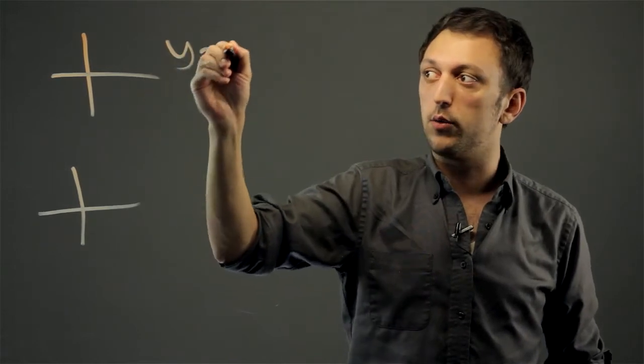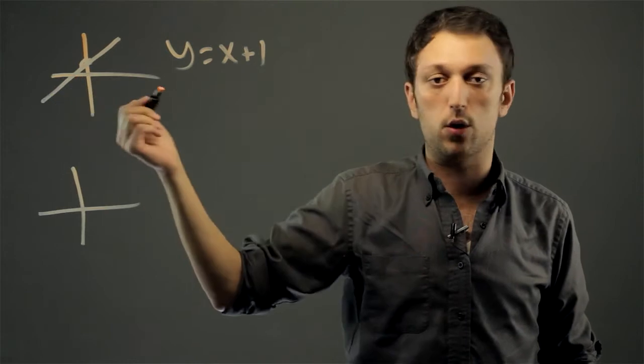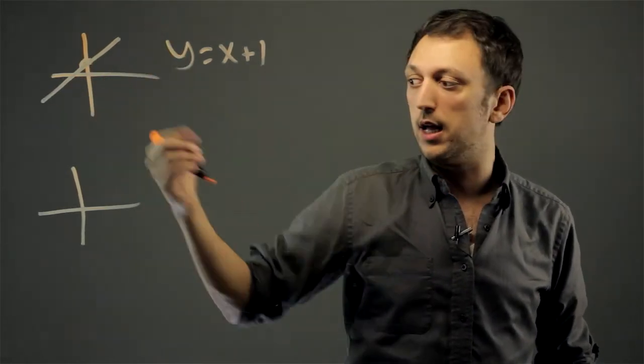First one, y equals x plus 1 would be a linear equation. It's very simple. We have a y-intercept of 1 and we have a straight line.